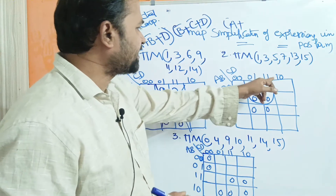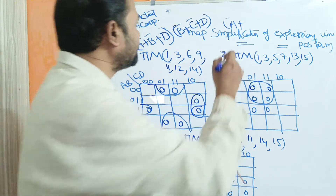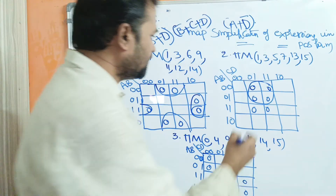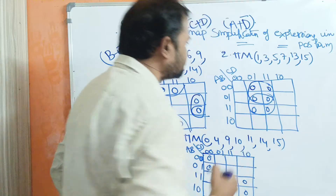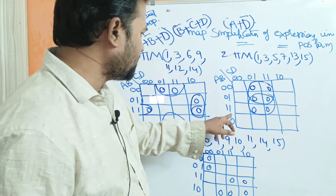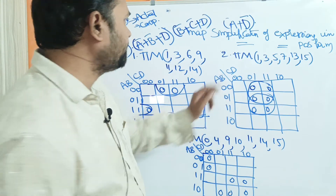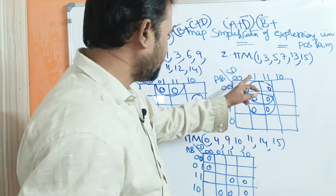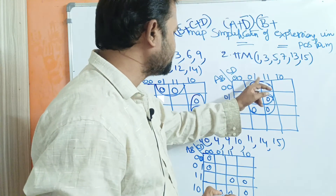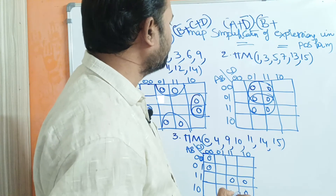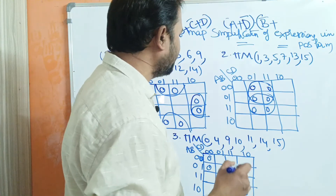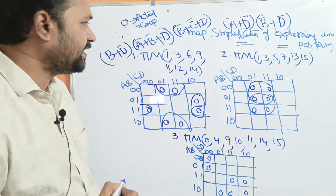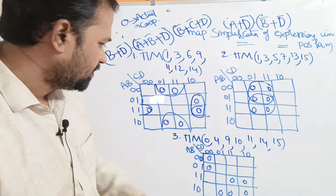In cell 0111, the second one is common. The second one is D. One means complement of the variable, so D̄. Similarly, grouping the next four zeros: the second one is common, which is B. One means complement, so B̄. Thus we get D̄ · B̄ + D̄ as part of the simplified expression. Now let us solve the third problem.